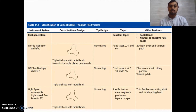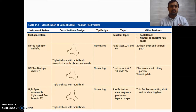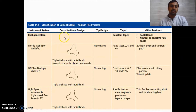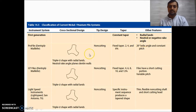Now we focus on the classification of NiTi rotary instruments given by the American Academy of Endodontics. Two things are important: the features of every generation and the cross-sectional design. First generation files have a constant taper, radial lands, and a neutral or negative rake angle.